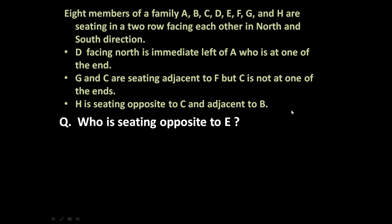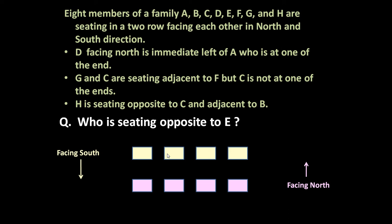Based on this information, whenever such type of question is asked, there are usually two, three, or sometimes even more questions based on this. So first let us analyze the given information. There are eight members in two rows, so let us draw eight members — four on this side and four on this side, facing north and facing south.